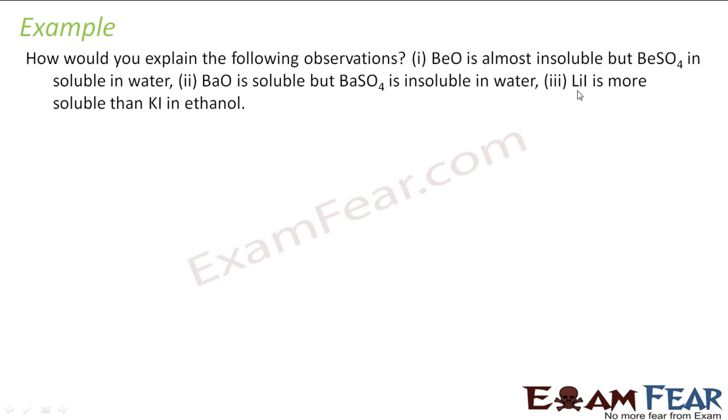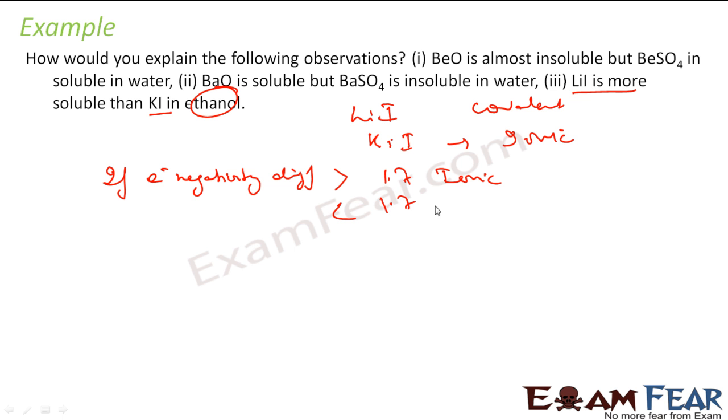Let's take the last part. LiI is more soluble than KI in ethanol. That means it looks like LiI is covalent, while KI is less covalent so it may be ionic. That is why LiI is more soluble in ethanol. If we can prove that LiI is covalent and KI is ionic, it proves the point. The rule we have is if the electronegativity difference is more than 1.7 it is ionic, less than 1.7 it is covalent. So let's find for LiI. For lithium it is 1.0 and for iodine it is 2.66. We find the difference: 2.66 minus 1.0 is about 1.66, so it is covalent.